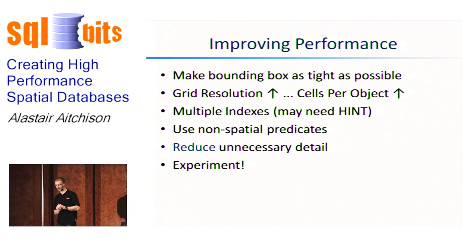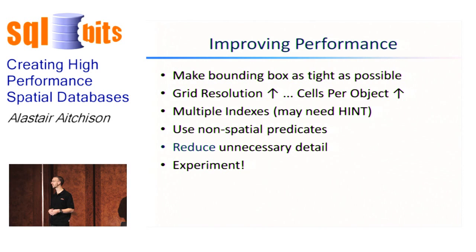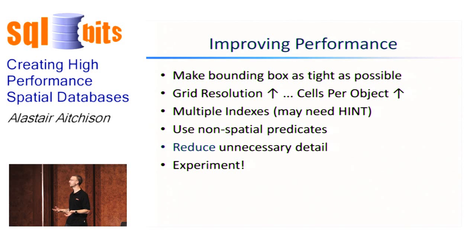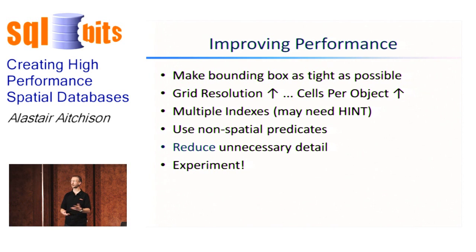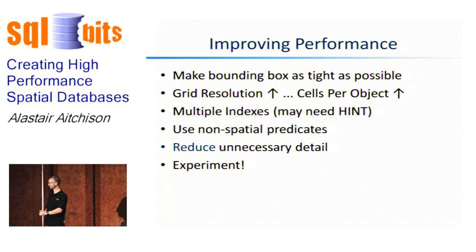Reduce unnecessary detail. Particularly when you download data from the internet or other sources, you may not get much control over the level of detail. Although it doesn't make a difference to the primary filter, when you get to the secondary filter where you're actually comparing point sets in both geometries, complicated shapes with lots of unnecessary points are going to be a lot slower. If you have global sales territories where you don't need millimetre resolution, you can use the Reduce method in SQL Server 2008, which generalises shapes — keeping the overall shape but cutting out intermediate points that don't add much.